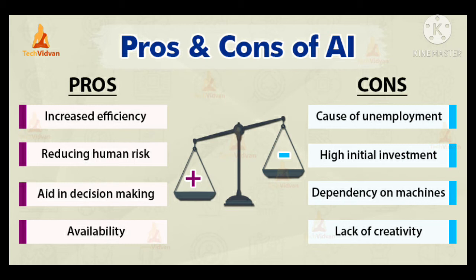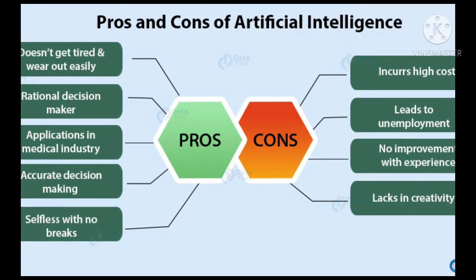Another advantage is that those machines do not require breaks or rest. Compared to humans, they can do a lot more work. We humans need rest in between, but machines do not require such breaks. On the other hand, AI machines are very costly and their repair and maintenance can cost a lot of money. Also, increased use of these AI machines can lead to unemployment.